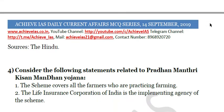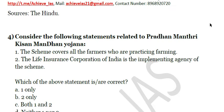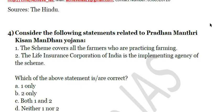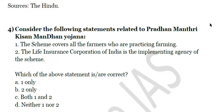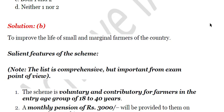The fourth question: consider the following statements related to Pradhan Mantri Kisan Mandhan Yojana. First, the scheme covers all farmers who are practicing farming. Second, the Life Insurance Corporation of India is the implementing agency of the scheme. The first statement is wrong because it is not available to all farmers — it is available to small and marginal farmers. The Life Insurance Corporation of India is the implementing agency, so only the second statement is correct. The answer is B.